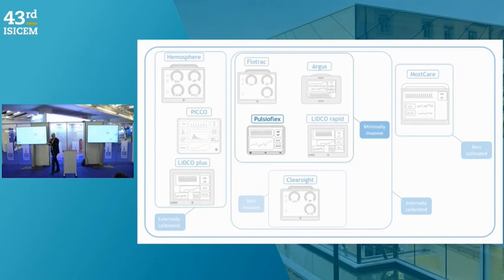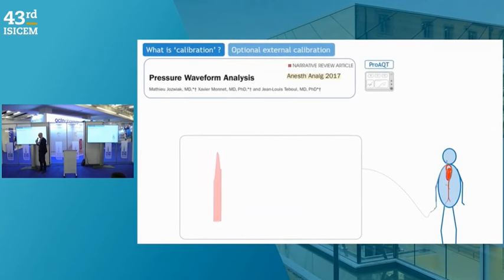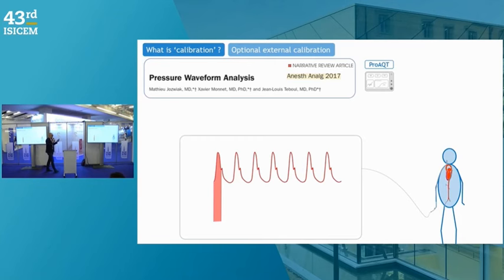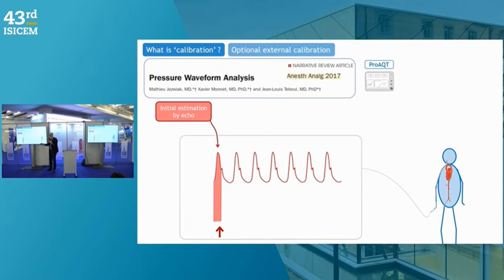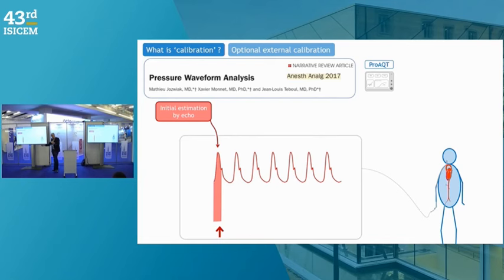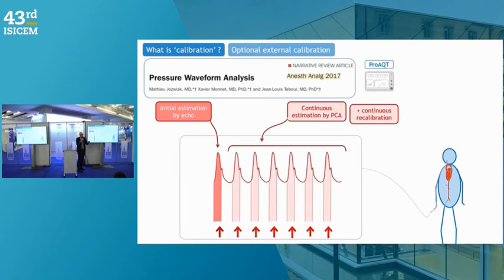One final word on the ProAQT PulsioFlex device: it is non-calibrated, but you can manually enter a cardiac output value estimated by echocardiography — measuring VTI and the LV outflow tract area. You enter this value, and the system becomes calibrated. It is not simple, since you must measure cardiac output with echo and then enter it into the device, but it gives a continuously displayed calibrated cardiac output.